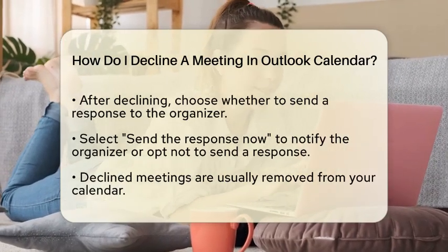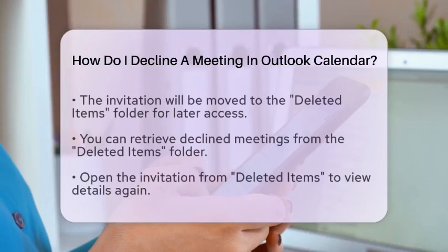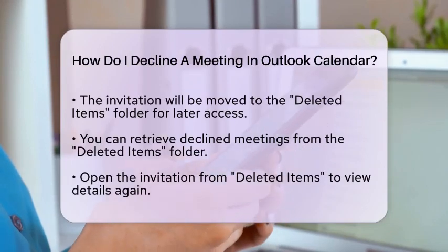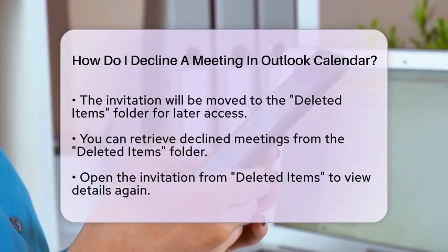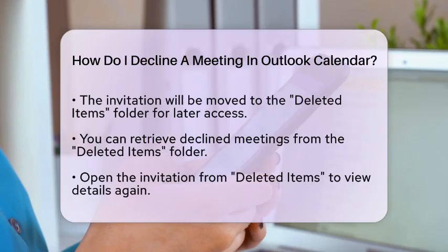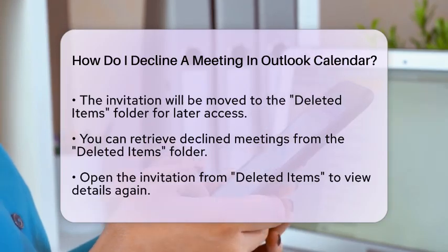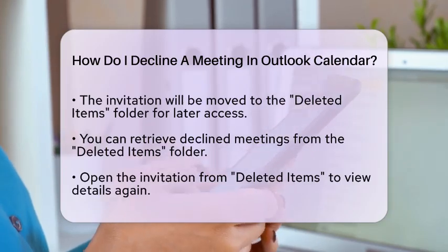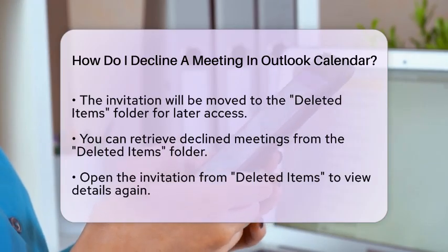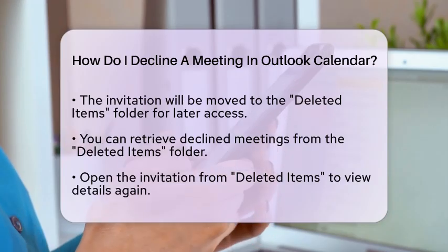When you decline a meeting, it is typically removed from your calendar. However, do not worry — the invitation will be moved to your Deleted Items folder, so you can still access it later if needed. If you find yourself needing to refer back to a declined meeting, you can easily retrieve it from the Deleted Items folder and view all the details again.